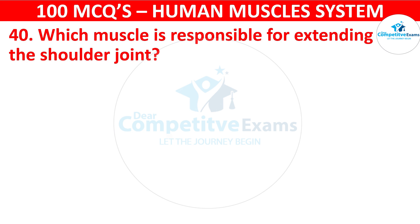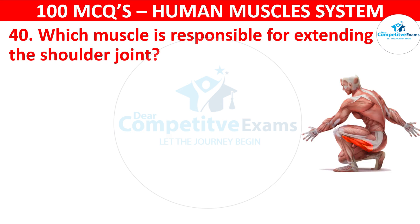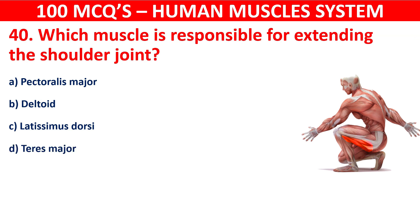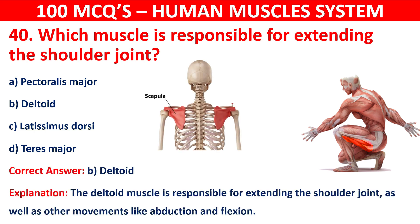Question 40. Which muscle is responsible for extending the shoulder joint? The correct answer is B, i.e. Deltoid. The deltoid muscle is responsible for extending the shoulder joint, as well as other movements like abduction and flexion.